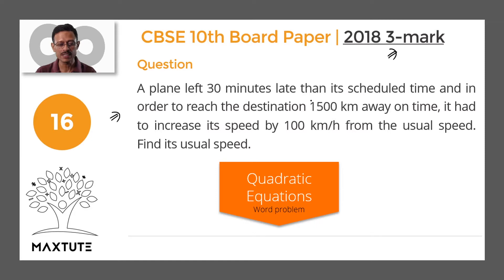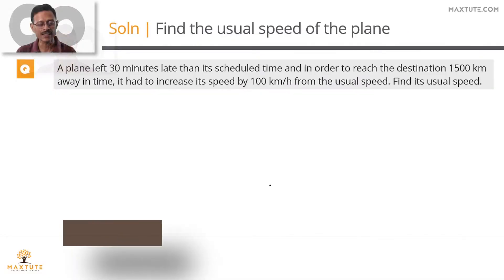A plane left 30 minutes late than its scheduled time and in order to reach the destination 1500 kilometers away on time, it had to increase its speed by 100 kilometers per hour. What we need to find out is the usual speed of this flight. Let's get started.